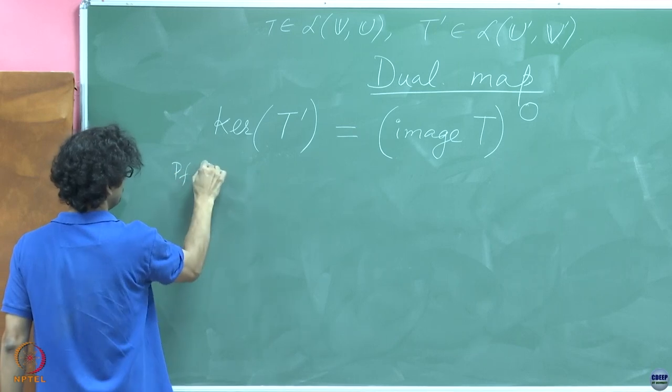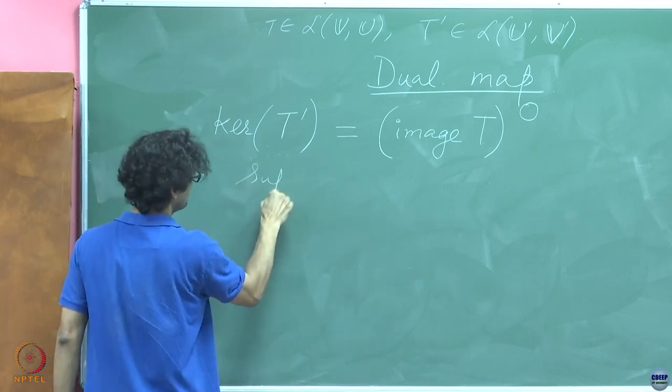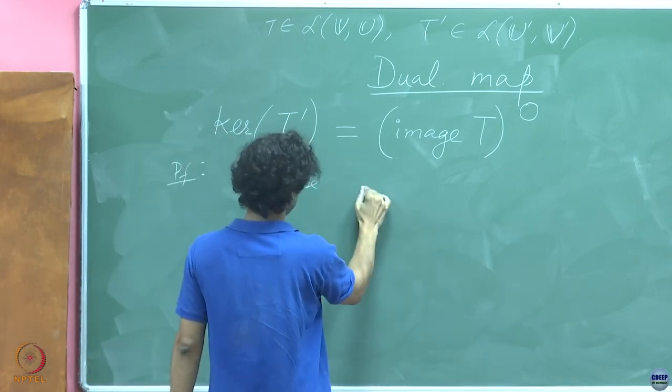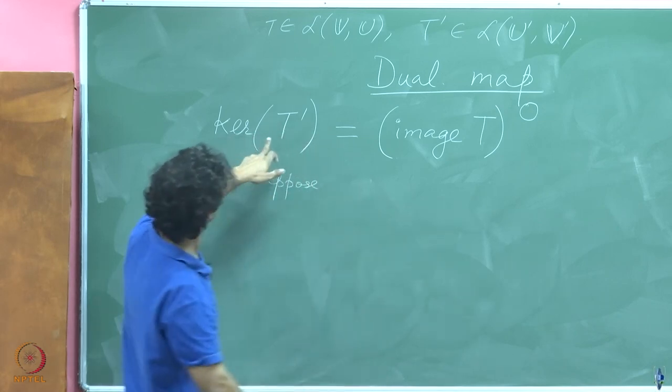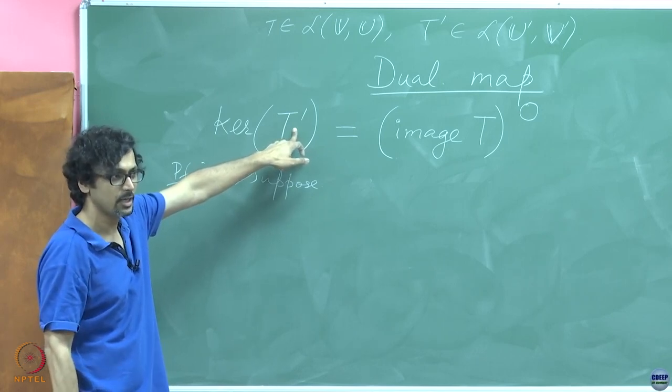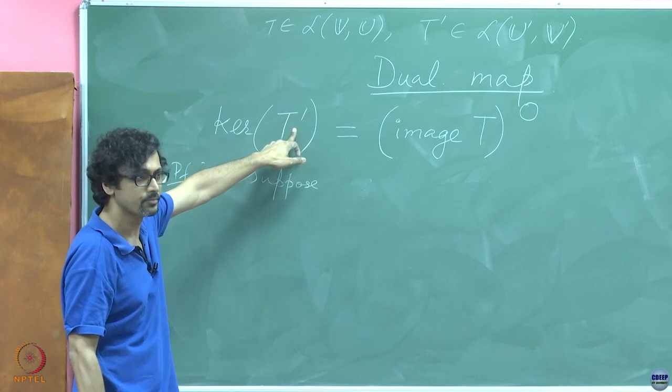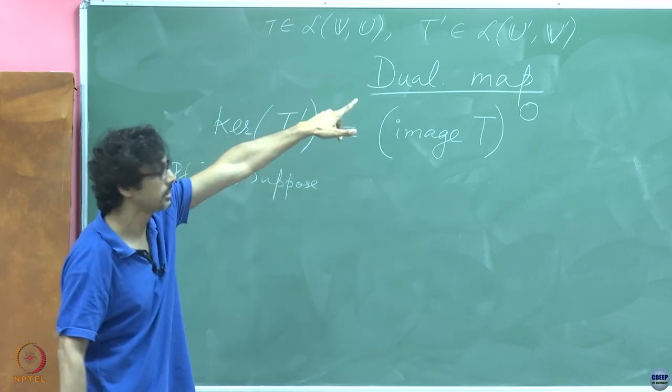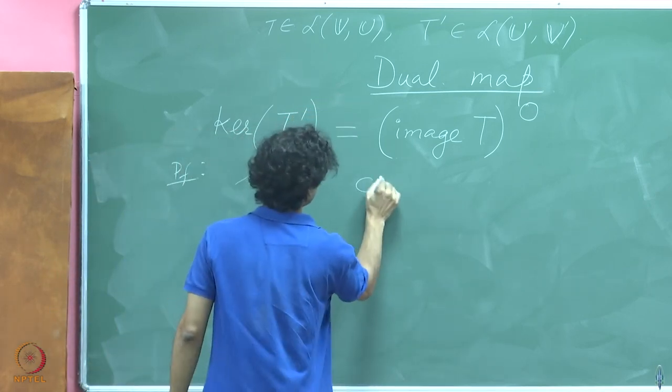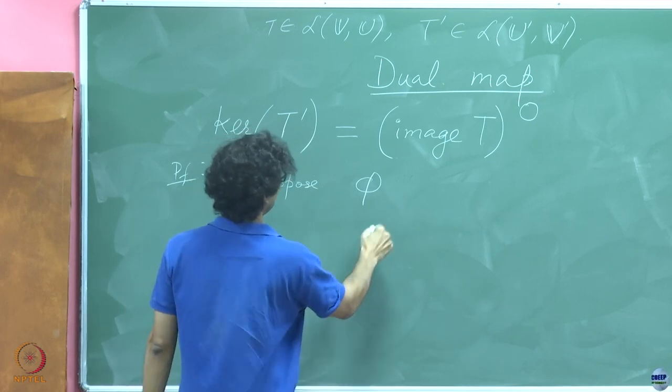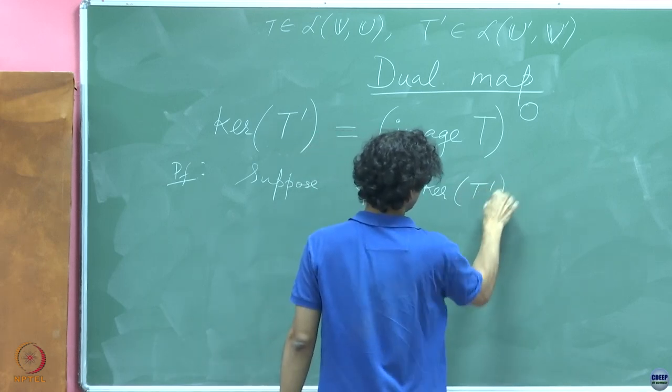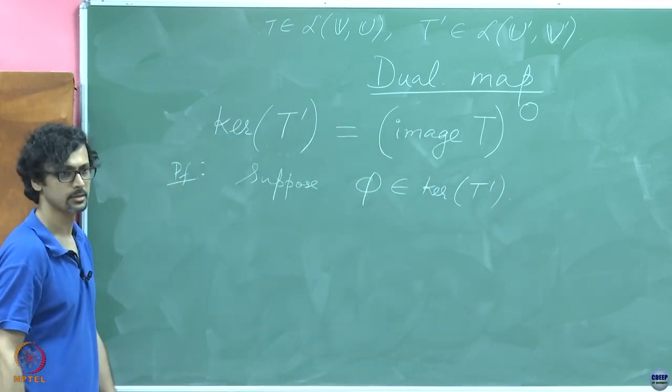So let us do a quick sketch of this. Suppose—so if something belongs to the kernel of this, it must be what? It must be a functional. Functional in what? Residing where? Inside U prime. Suppose this φ belongs to kernel of T prime.